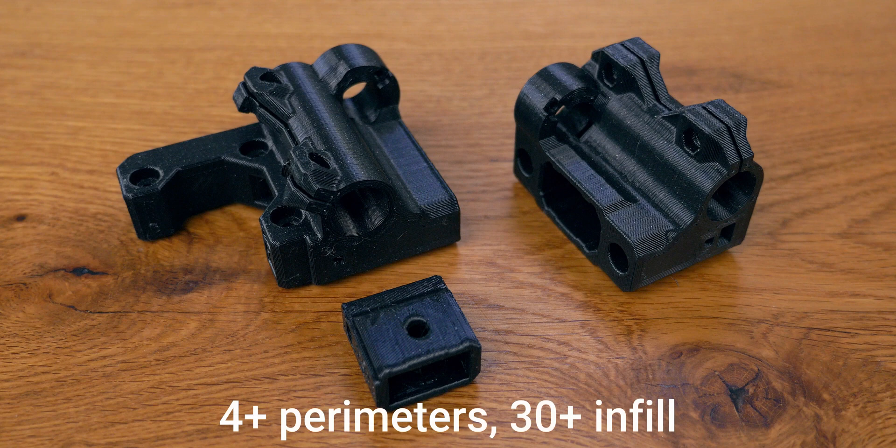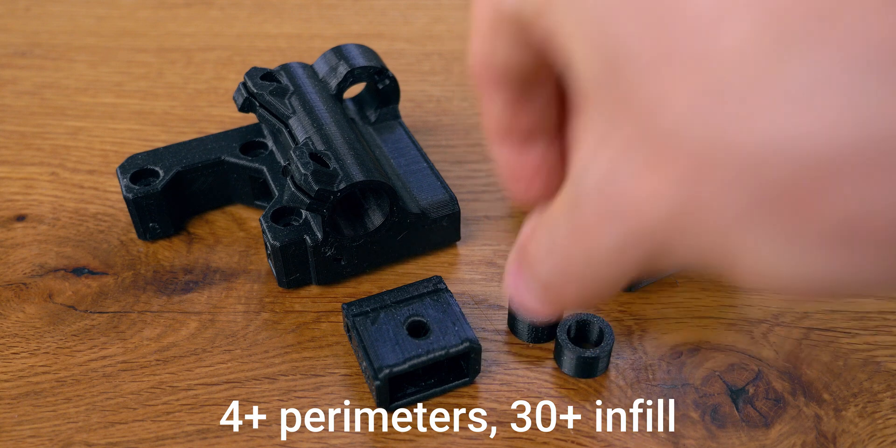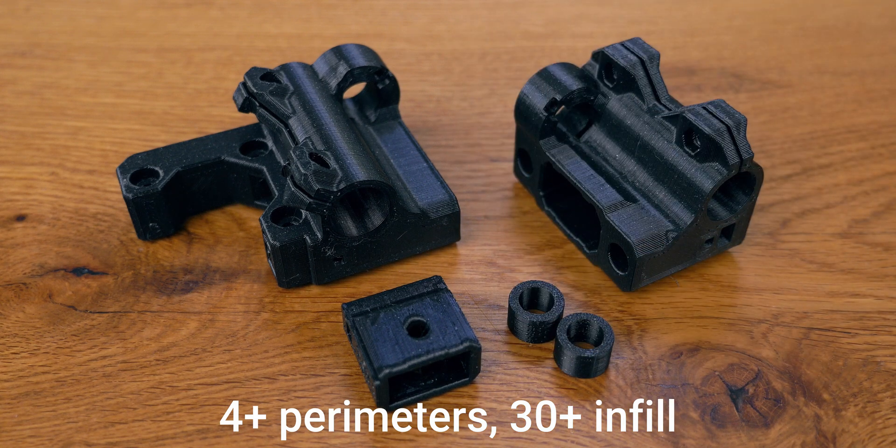There's one for the toothed idler and one for the toothless idler. And if you're using short bearings for the z-axis, you can print two of these spacers as well, to make it easier to align the bearings.